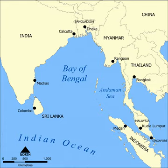The Bay of Bengal is the northeastern part of the Indian Ocean, bounded on the west and northwest by India, on the north by Bangladesh, and on the east by Myanmar and the Andaman and Nicobar Islands of India. Its southern limit is a line between Sri Lanka and the northwesternmost point of Sumatra. It is the largest water region called a bay in the world, with several countries in South Asia and Southeast Asia dependent on it.